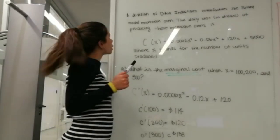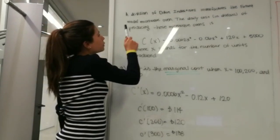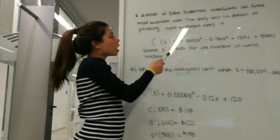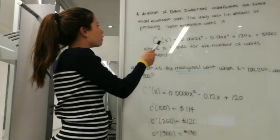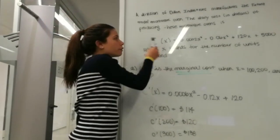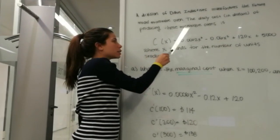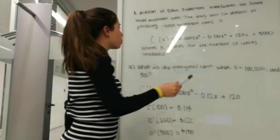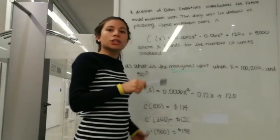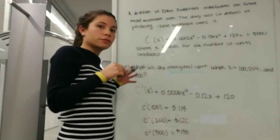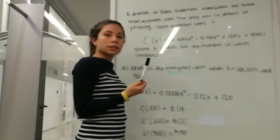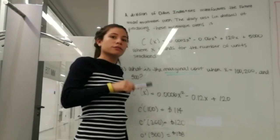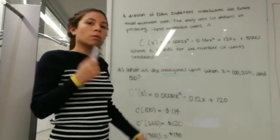As an example of marginal cost: a division of different industries manufactures a particular amount of microwave ovens. The daily cost in dollars of producing these microwave ovens is the following cost function, where x stands for the number of units produced. The marginal cost is the derivative of the cost function — the cost of producing one additional unit — meaning it's the difference in total cost for one additional unit.